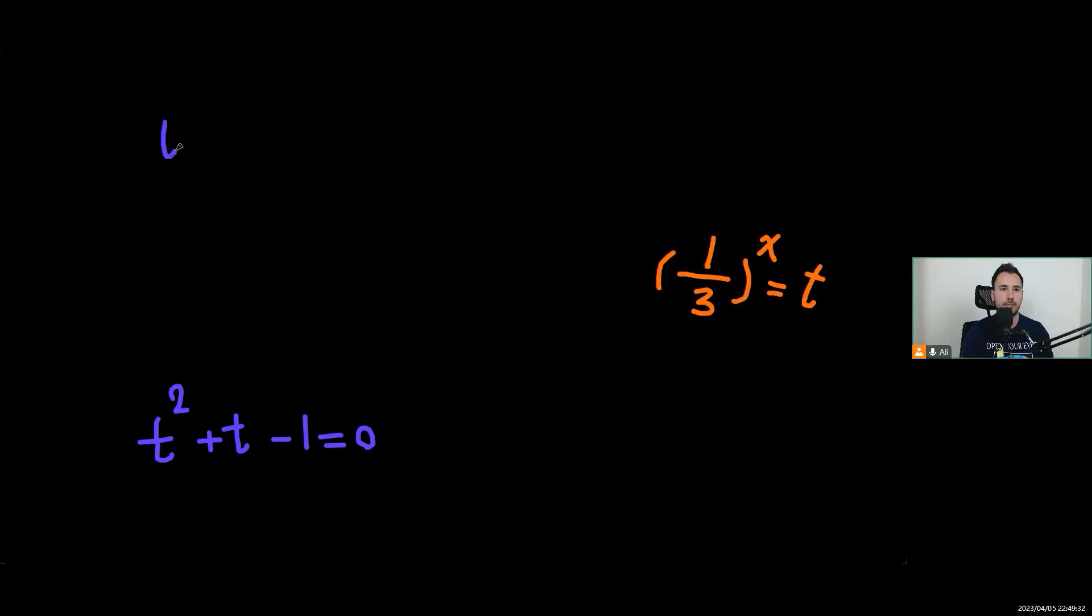So t would be 2 values, it's going to be negative 1 plus minus square root of 1 minus negative 4 will be positive 4 over 2. So t will have two values: negative 1 plus square root of 5 over 2, and the other one will be negative 1 minus square root of 5 over 2.